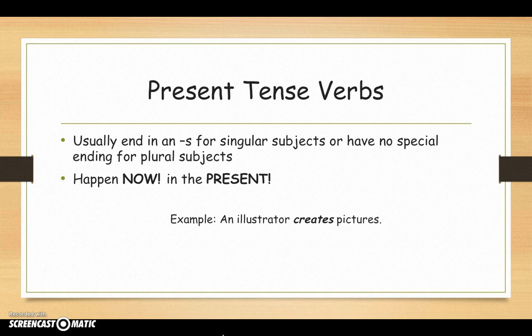An example is an illustrator creates pictures. He did not create them. He did not do it in the past. He did it now. He creates them now. An illustrator is a singular subject. There's only one illustrator, that way creates has an S on the end of it.